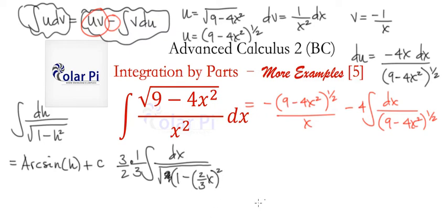I'm saying that this integral changes into 3/2 times 1/3 times the integral of dh over square root of 1 minus h squared, with the substitution that h equals 2/3 x. We can cancel this 3 and this 3, and the rest is history, which is that this integral is going to be 1/2 and then arcsin of 2/3 x plus c.